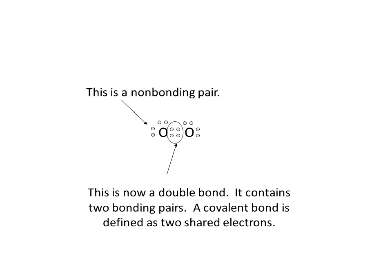If we look at this structure, you can see that the two pairs between, those are the bonding electrons. Those, because there's two pairs, we consider that to be a double bond. Notice one pair of electrons is a single bond, two pairs of electrons is a double bond, and three pairs would be a triple bond.